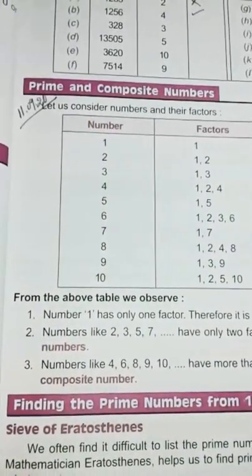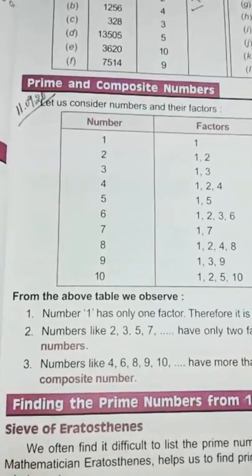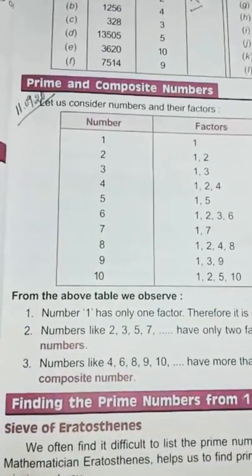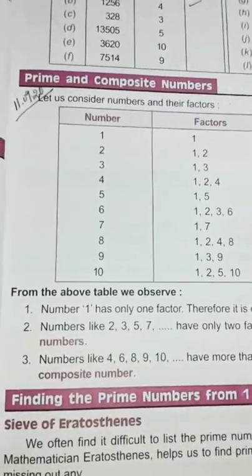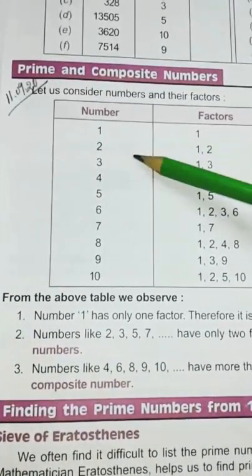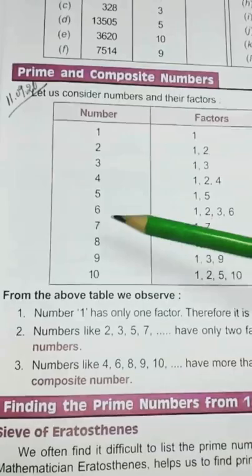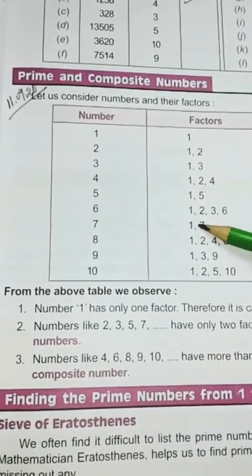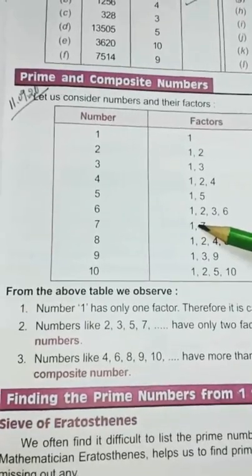Children, what are prime numbers? Numbers that have only two factors are known as prime numbers. For example, you can see 2, 3, 5 and 7. They have only two factors. So they are known as prime numbers.